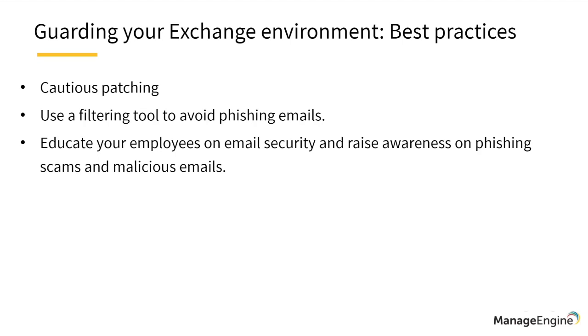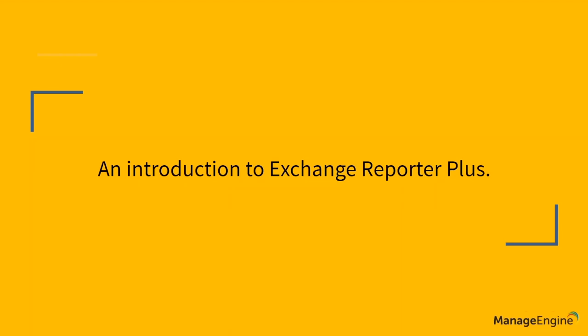So those are the four tips I've given you today. We first talked about auditing mailbox permission changes, then about how you can have a proper patching plan in your organization, then about OWA and the best practices to avoid its weaknesses being exploited, and finally about malicious attacks by way of emails. I've given you some best practices and I hope you found them helpful. If you have your own best practices, you can always reach out through the chat box.